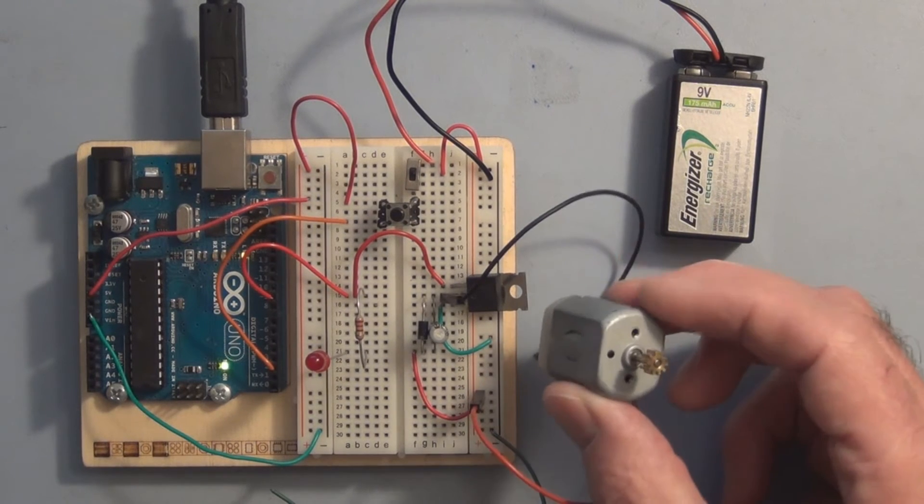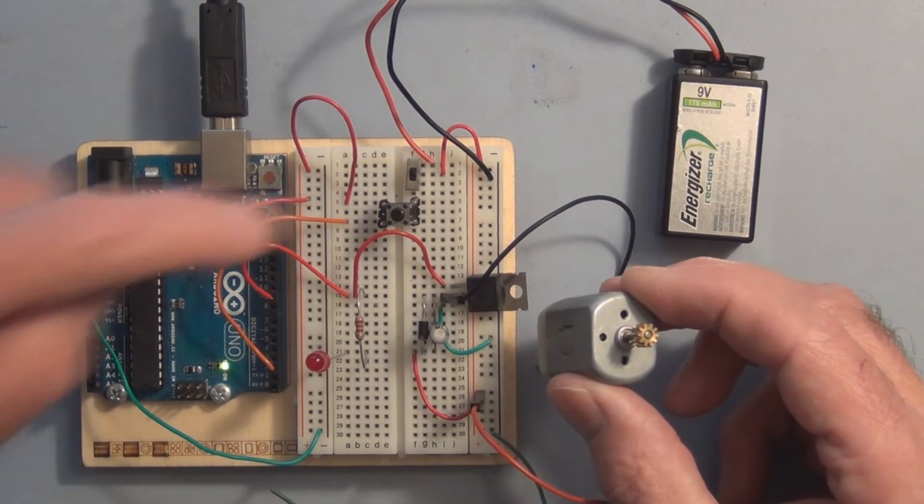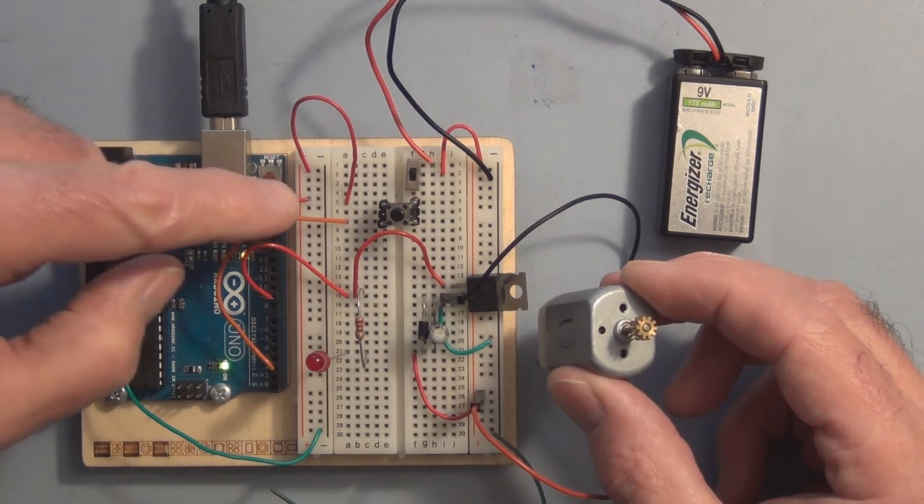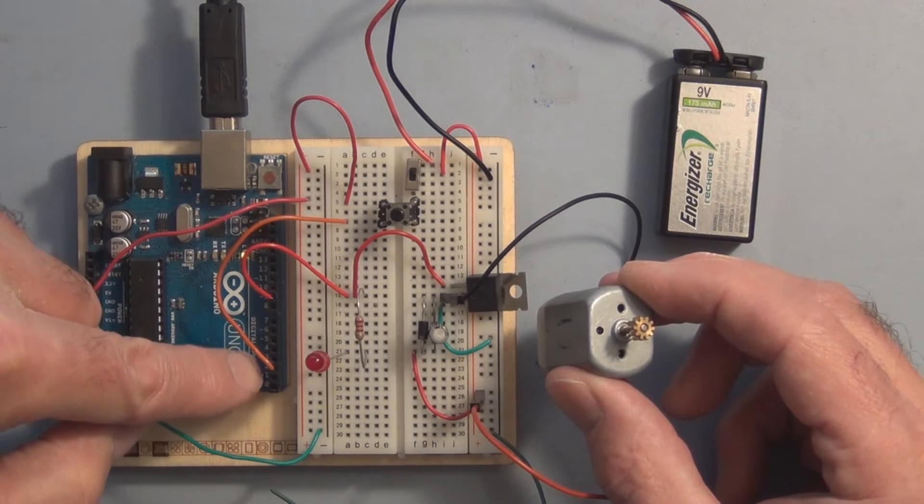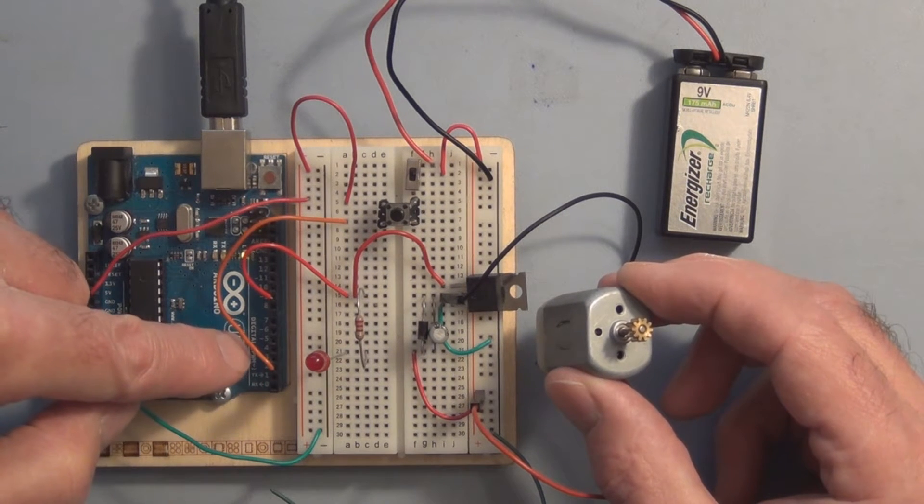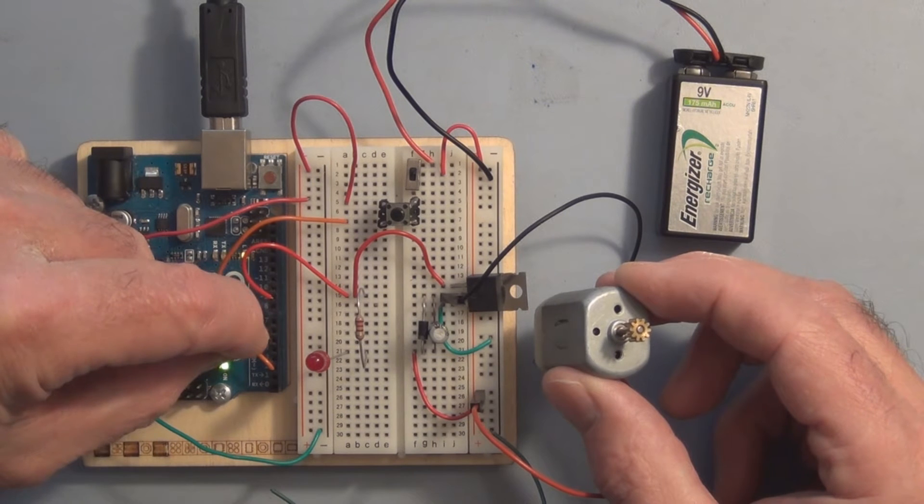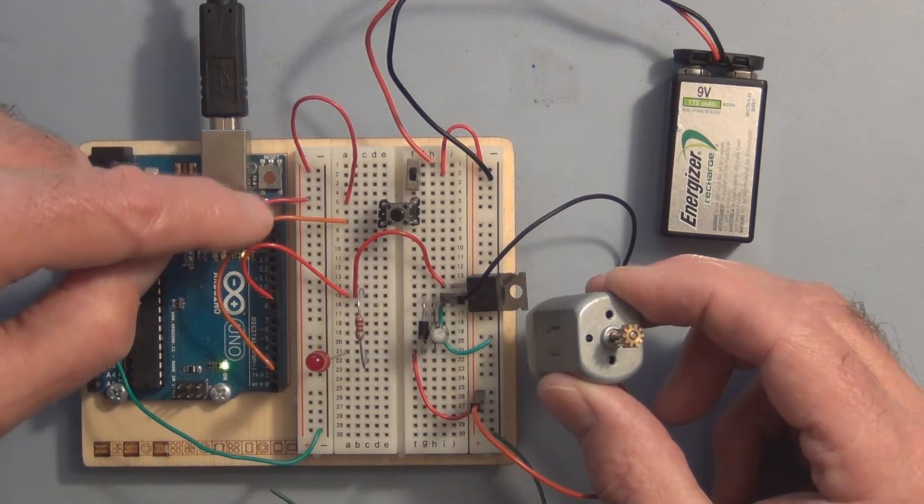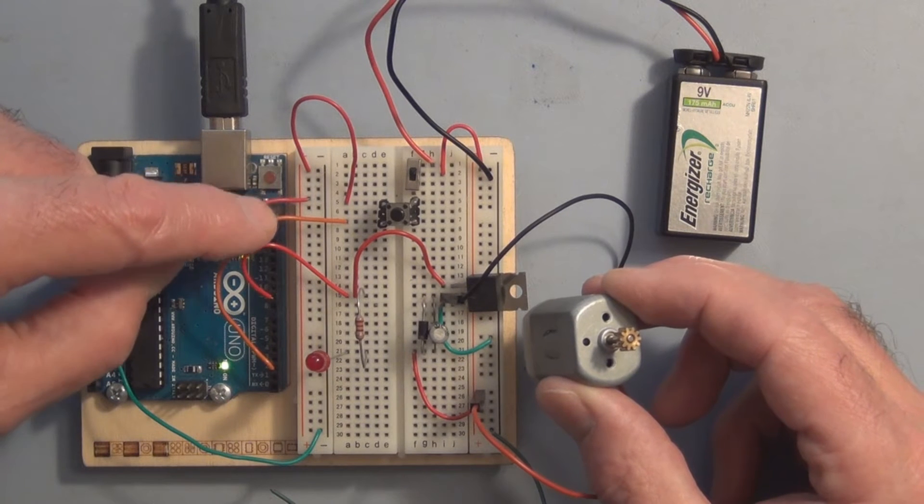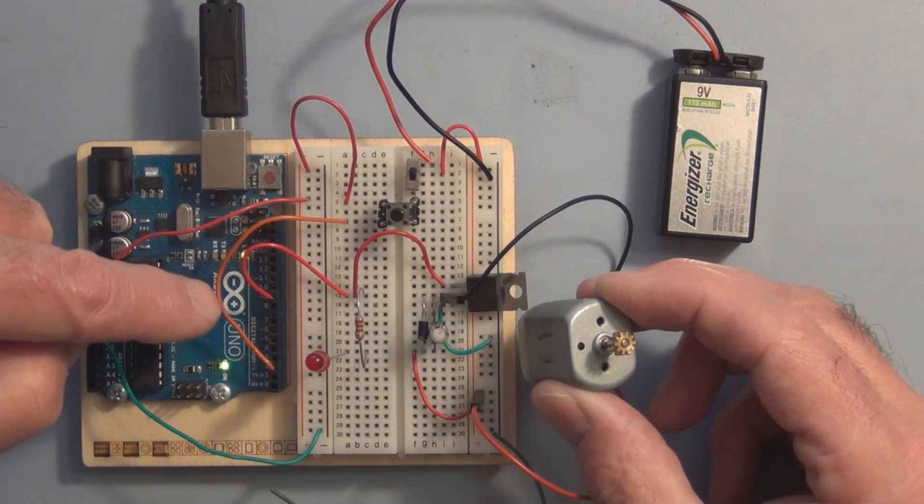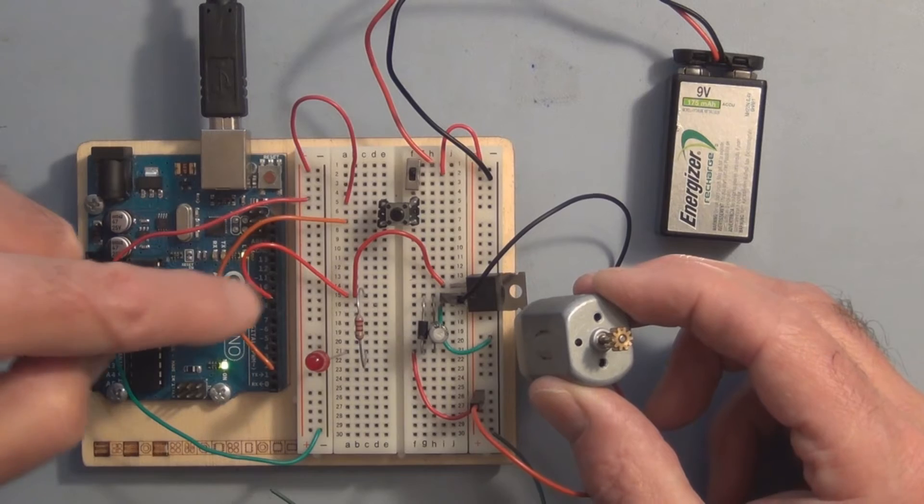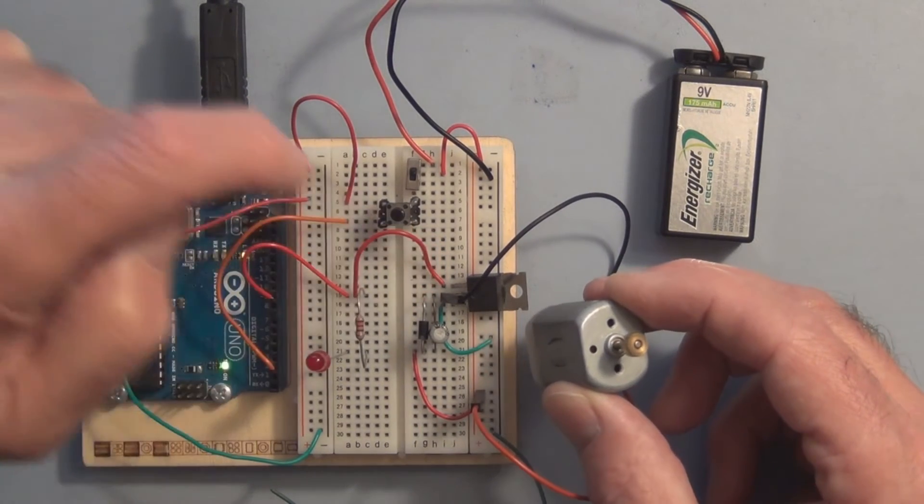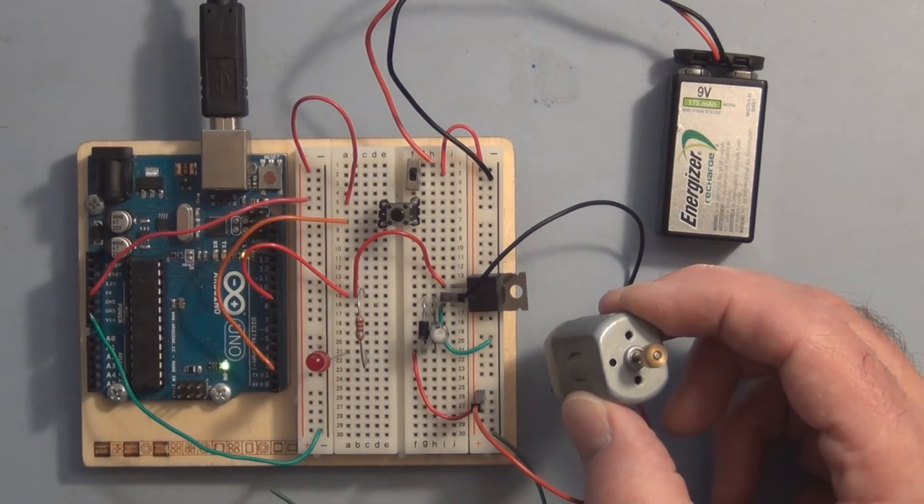Now this circuit here just responds to an on-off switch that's being monitored by pin 2. When it reads pin 2 it does a digital read, then it's going to do a digital write from pin 9 here to the gate of the MOSFET and turn it on.